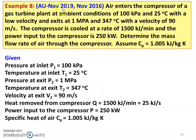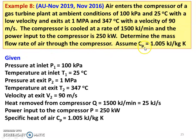Next problem — from the November 2019 and November 2016 question papers. Air enters a compressor of a gas turbine plant at ambient conditions of 100 kPa and 25 degree Celsius with low velocity, and exits at 1 megapascal and 347 degree Celsius with a velocity of 90 meters per second. The compressor is cooled at the rate of 1500 kJ per minute, and the power input to the compressor is 250 kW. Determine the mass flow rate of the air. Assume CP = 1.005 kJ per kilogram Kelvin.